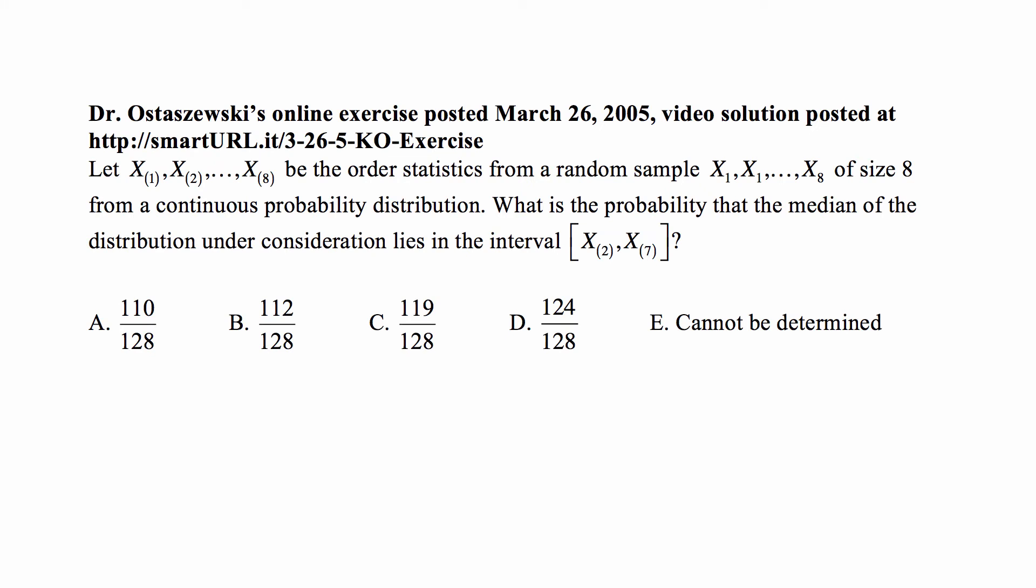Here's the problem. We have x1, x2 through x8 are the order statistics from a random sample x1 through x8. Now the first x1 through x8 have a subscript in parentheses because they are ordered, as opposed to the random sample of size 8 from a continuous probability distribution. What is the probability that the median of the distribution under consideration lies in the interval between x(2) and x(7)?